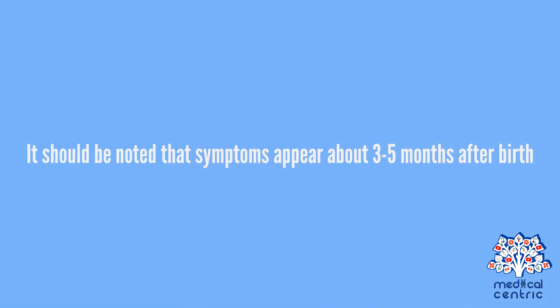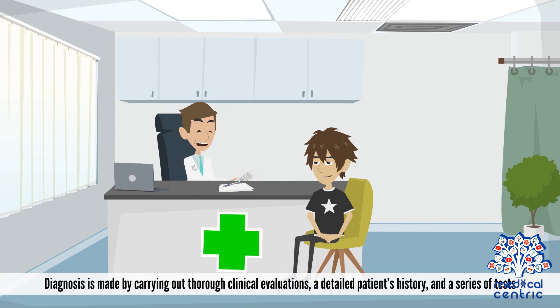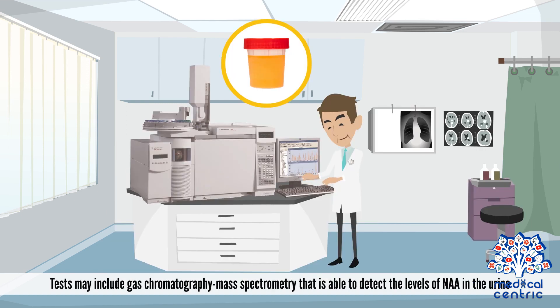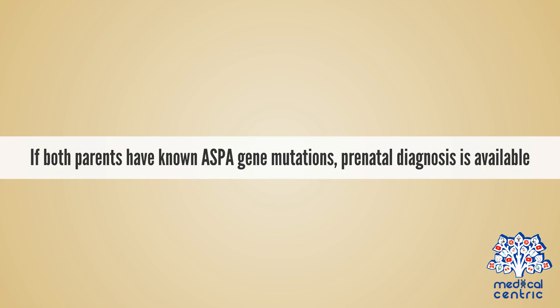It should be noted that symptoms appear about three to five months after birth. Diagnosis is made by carrying out thorough clinical evaluations, a detailed patient history, and a series of tests. Tests may include gas chromatography and mass spectrometry, which are able to detect the levels of NAA in the urine. Elevated levels of NAA can also be detected in the blood and cerebrospinal fluid, or CSF. If both parents have known ASPA gene mutations, prenatal diagnosis is available.